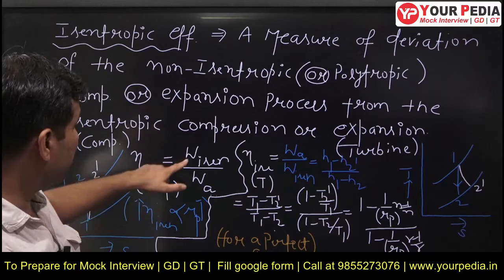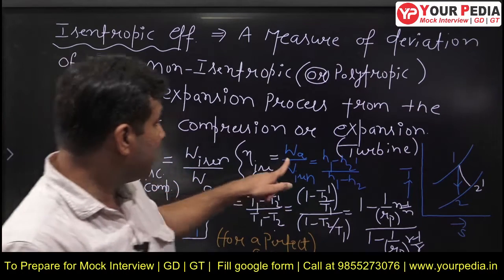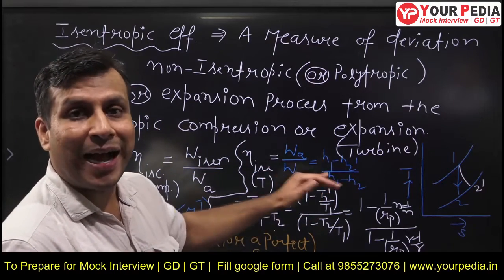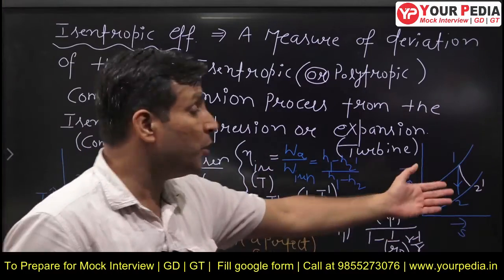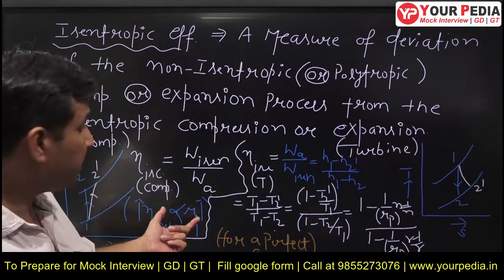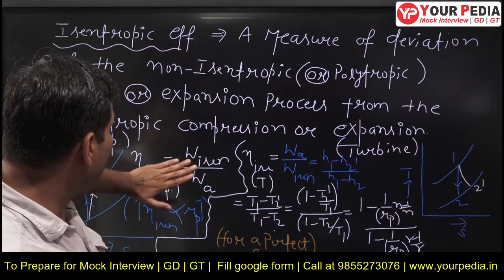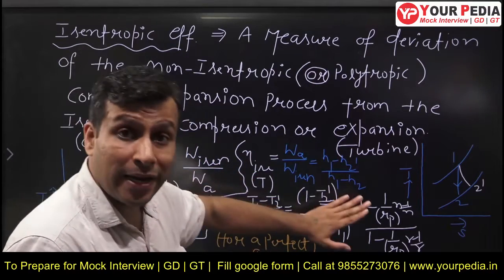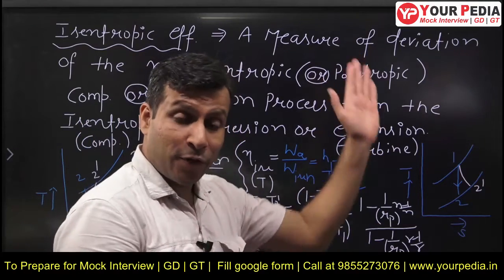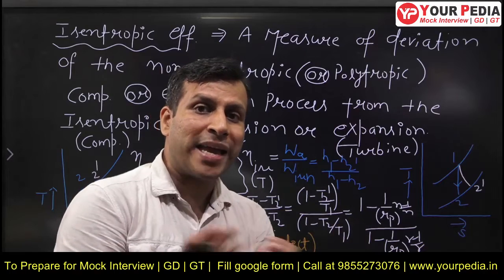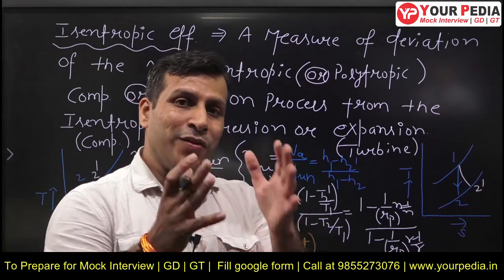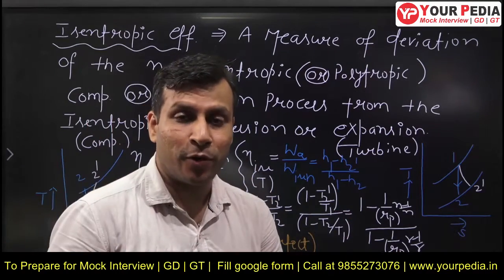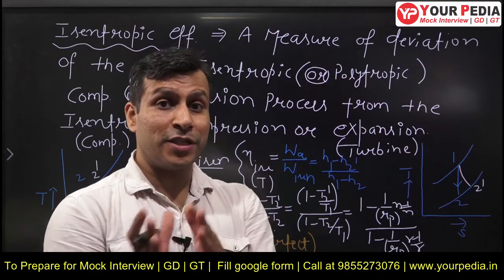Isentropic efficiency of compression is W_isentropic divided by W_actual. Isentropic efficiency of the turbine is W_actual divided by W_isentropic, because for the turbine the isentropic work will be more and actual work will be less since it is a work-producing device, whereas the compressor is a work-absorbing device. I am not discussing the polytropic efficiency of the compressor here - I am only discussing the isentropic efficiency of the turbine. You can carry out the same procedure for the compressor.